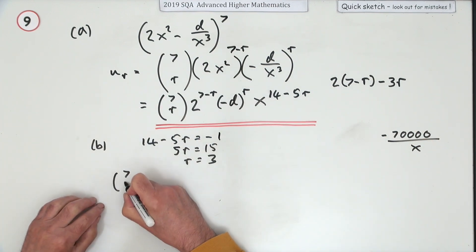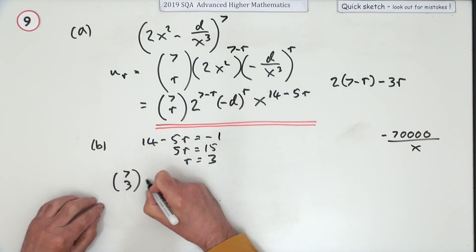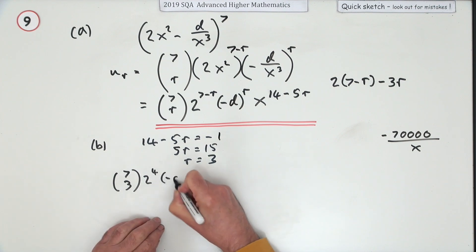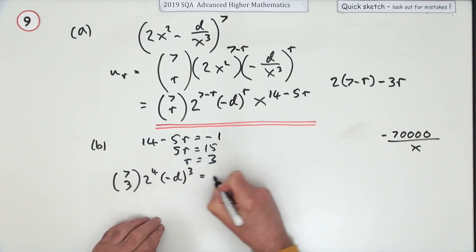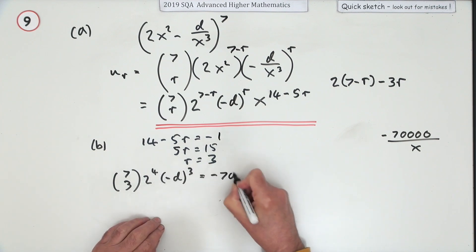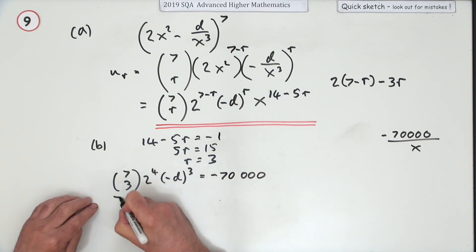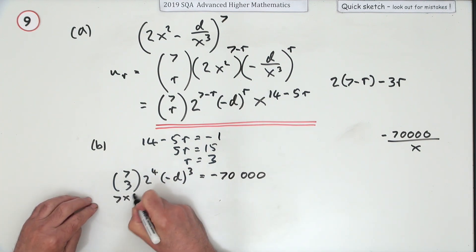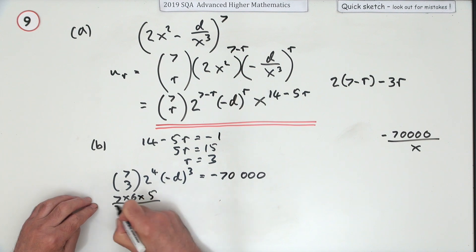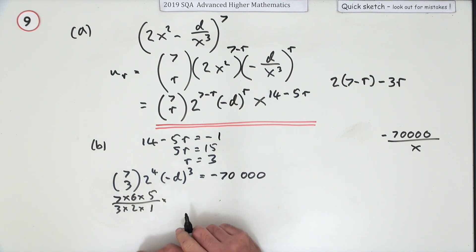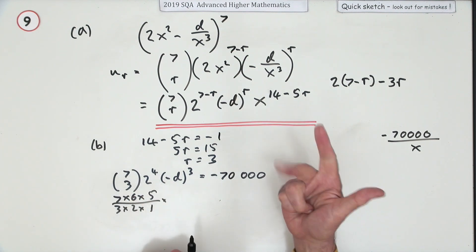Pop r = 3 into the expression and compare the coefficient with negative 70,000. That gives C(7,3) times 2 to the power 4 times (negative d) to the power 3 equals negative 70,000. C(7,3) is 7 times 6 times 5 over 3 times 2 times 1, which is 35. Two to the power four is 16.